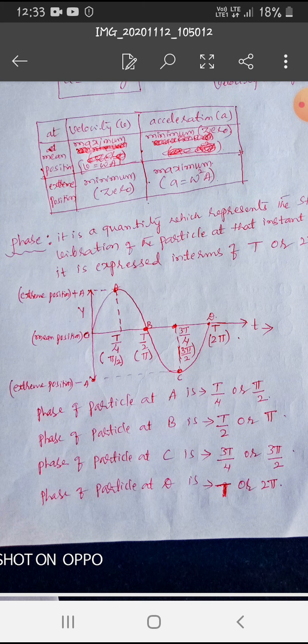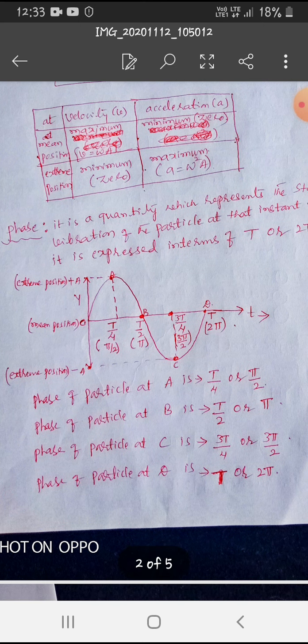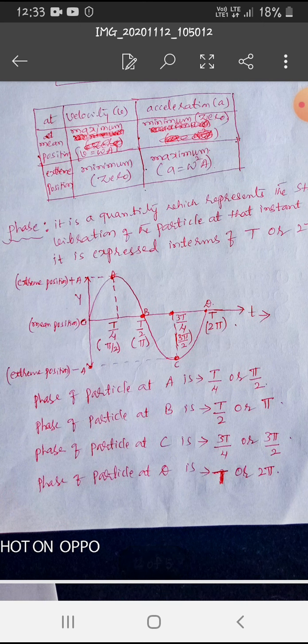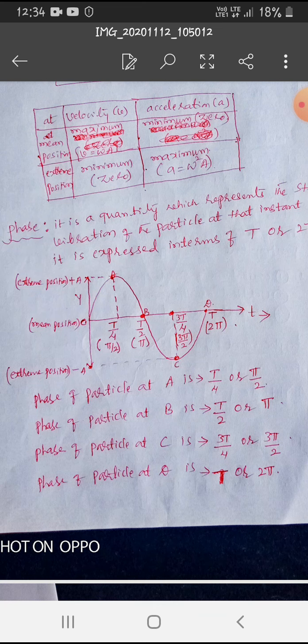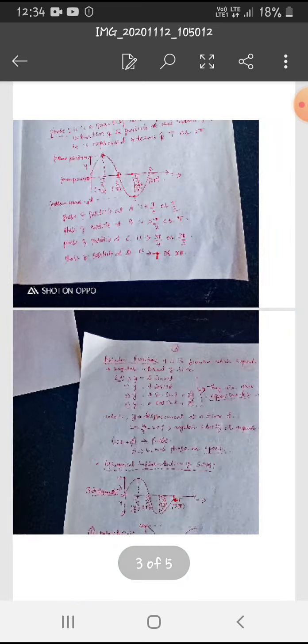And again, if it go down, extreme position, minus extreme position, not plus, minus. If it go, then it is plus. If it go to down, then it is minus extreme position. If it go to minus extreme position, then it is 3 T by 4 or 3 pi by 2. And if it come back to its original mean position, then it is T or 2 pi.